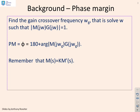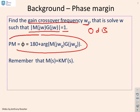Quick reminder of how the phase margin is defined. First, you find the gain crossover frequency ω_g, defined as the frequency where the modulus of M(jω_g)·G(jω_g) equals 1, or equivalently 0 dB. Having done that, you substitute that frequency into the phase margin formula: phase margin equals 180 plus the argument of M·G evaluated at ω_g.